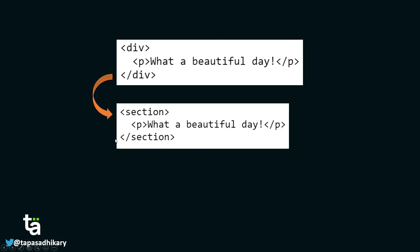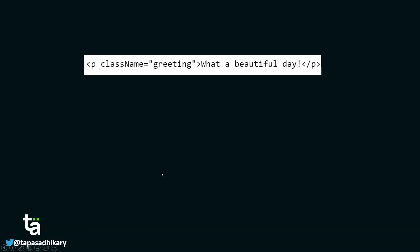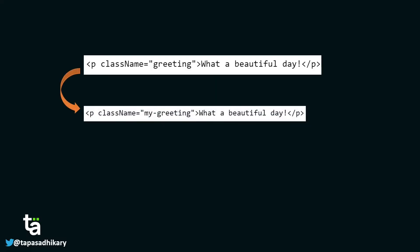The second example: a p tag has an attribute class name of 'greeting' with some text. The change is only in the class name — from 'greeting' to 'my-greeting'. The root element is not changing, only the attribute is changing. In this case there is no tear-down. Only the attribute section gets changed, and only that particular portion is reflected in the original DOM as part of batch update.